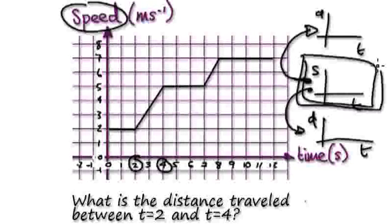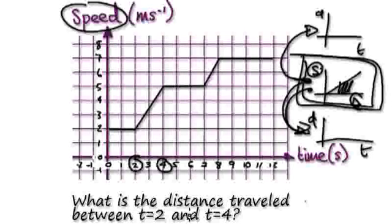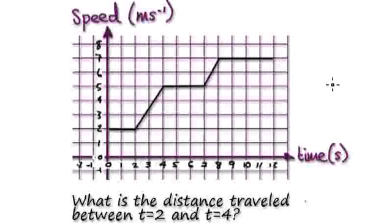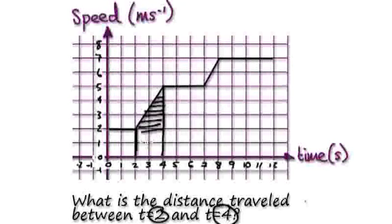In this case, you've been given the speed-time graph. If you want to know the distance, then it's the area underneath the speed-time graph that tells you the distance traveled. We want to know the distance, so we've got to work out the area underneath the graph. Time equals 2 is here, and time equals 4 is here. The area here represents the distance traveled between time equals 2 and time equals 4.